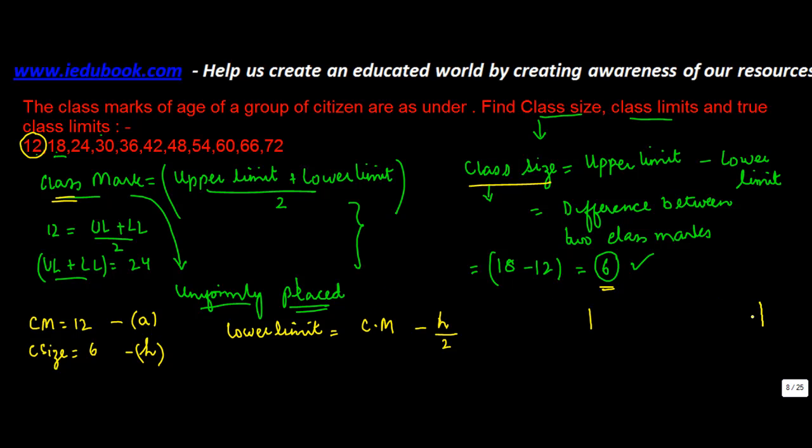Now, how do you know this? Well, let's see it's something like this. So let's say, this is your lower limit, and this is your upper limit of a class. Let's call this as X. Let's call this as Y. Class mark is nothing but X plus Y divided by 2. Now, if we say that Y minus X is equal to H, the difference between these two is equal to H.